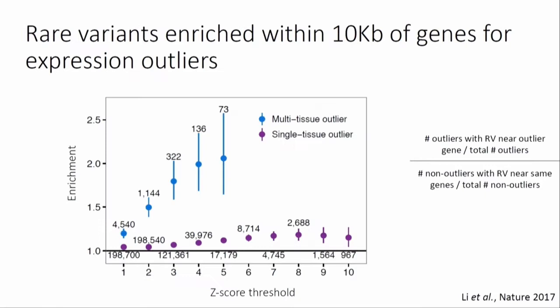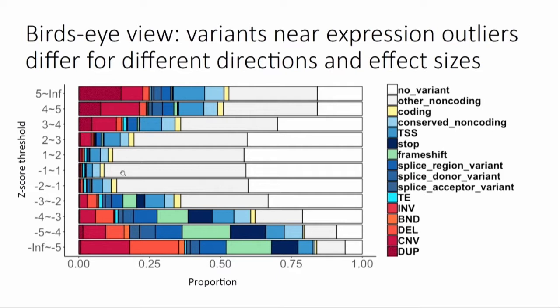Individuals who express a gene very highly are at the top; individuals who under-express it in an extreme way are at the bottom; non-outliers are in the middle — these are Z-score thresholds. These show us the proportion of individuals who have a nearby rare variant within 10 KB and all the different annotations we find for those rare variants. Things like structural variants are often associated with very high over-expression or very low under-expression. Under-expression individuals have many more deletions, whereas over-expression individuals have things like duplications. We also see big effects of frameshift variants and stop variants. Many of our extreme expression individuals do have a nearby rare variant that looks like it's explaining the effect.